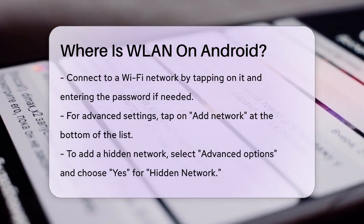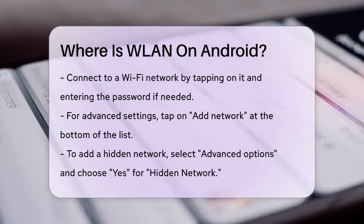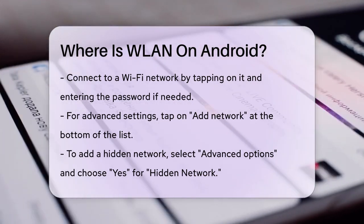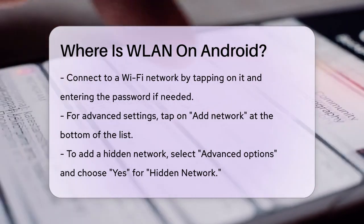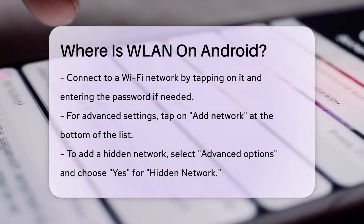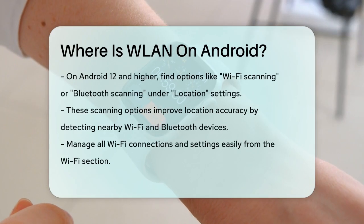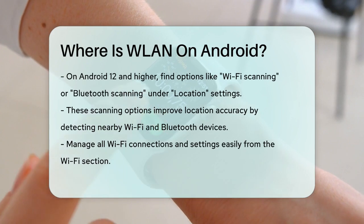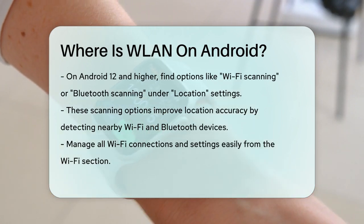On some Android versions, especially Android 12 and higher, you might see additional options like Wi-Fi scanning or Bluetooth scanning under the Location settings. These help your device get better location information by scanning for nearby Wi-Fi access points or Bluetooth devices.